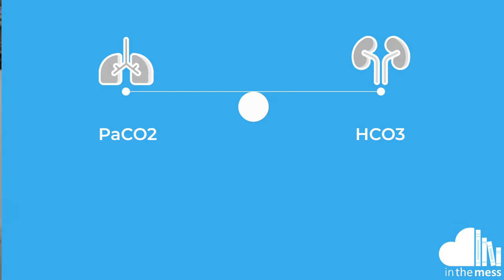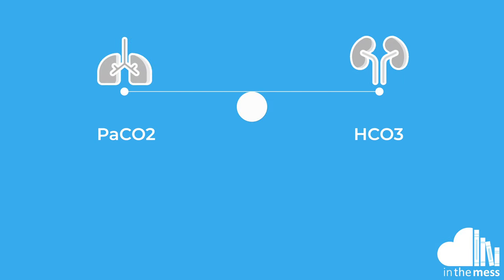Next, let's look at pH. Normal is 7.35 to 7.45. Are they acidotic or alkalotic? We need to work out what may be causing this derangement, and to do this we'll look at PaCO2 and bicarbonate.